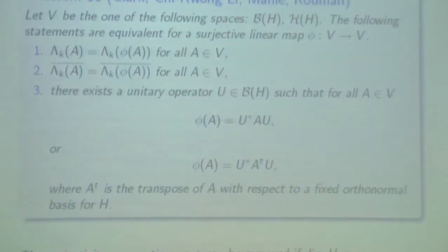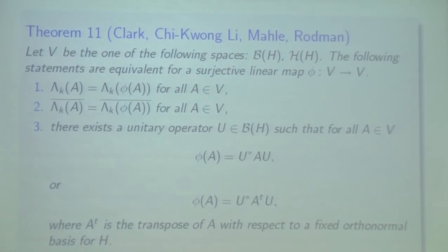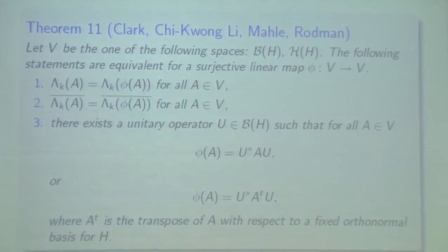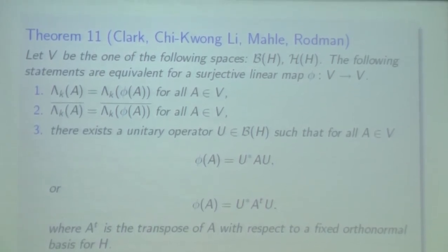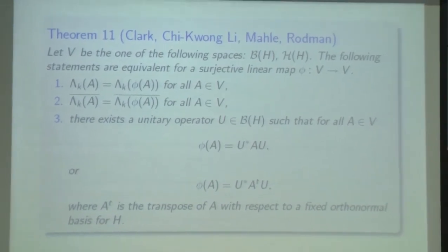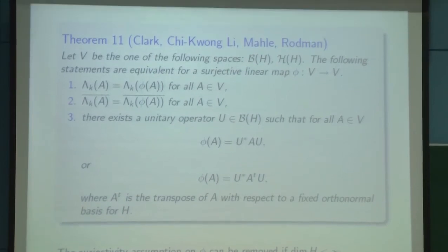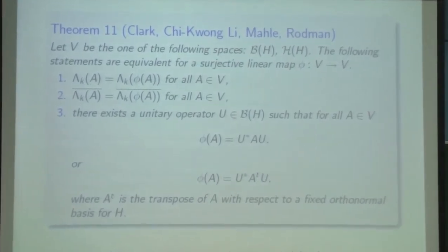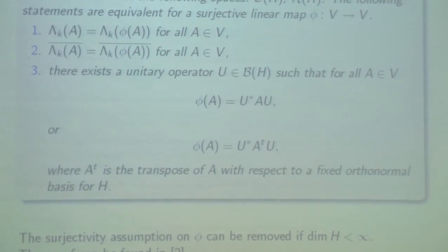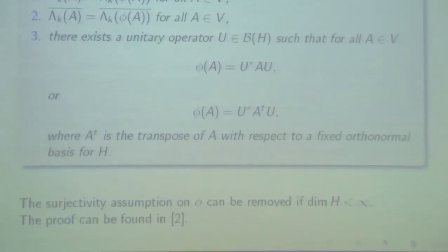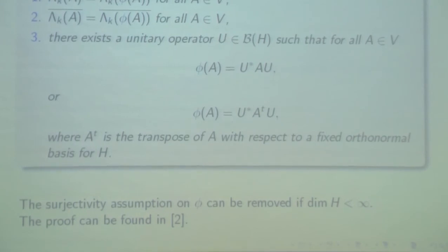We present a quite recent theorem stating that if phi is a map on one of the following spaces — such as the space of all bounded operators or the space of all self-adjoint operators — then for a surjective linear map phi, the following conditions are equivalent: that phi preserves the character numerical range; that phi preserves the closure of the character numerical range; and that the operator phi has the following form, which is an automorphism or anti-automorphism.